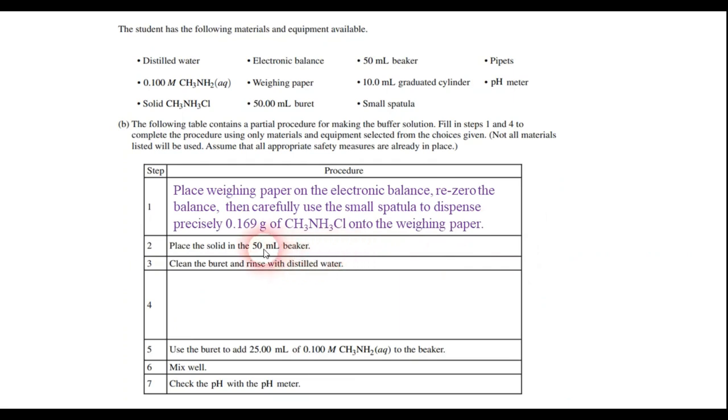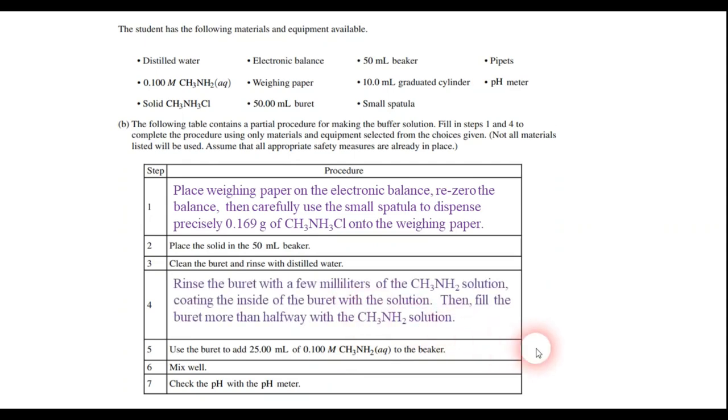Now, step two, you take that solid, place it in the beaker. Step three, you clean the burette and rinse it out with distilled water. And what do you do next? What do you do before you actually use the burette to add the 25 mils of the solution to the beaker? Well, somehow you have to add the compound, that solution, the methylamine solution, to the burette.